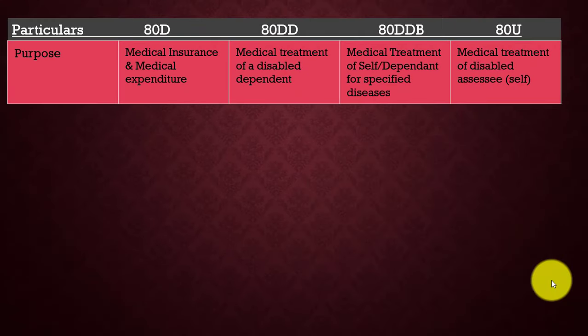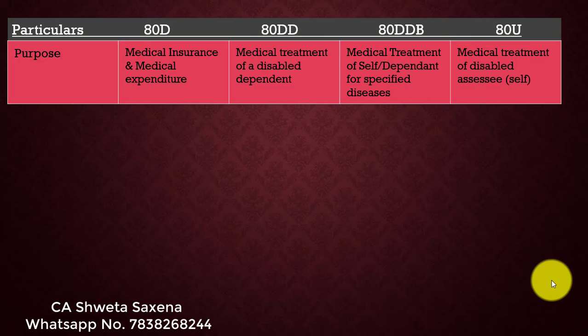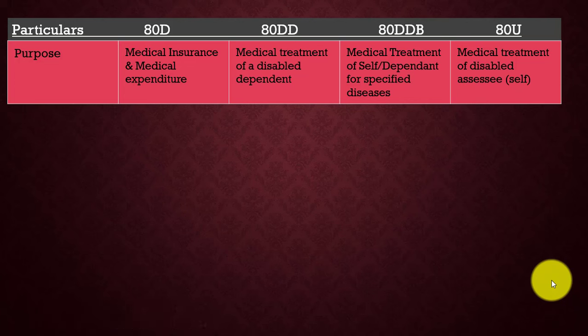In Income Tax, there are 4 sections for medical expenditure claims: Section 80D, Section 80DD, Section 80DDB, and Section 80U. The conditions of all 4 sections are different and the deduction limits are different. We have made a comparison chart covering all 4 sections, so we can easily understand which section gives which limit and which diseases have been specified.